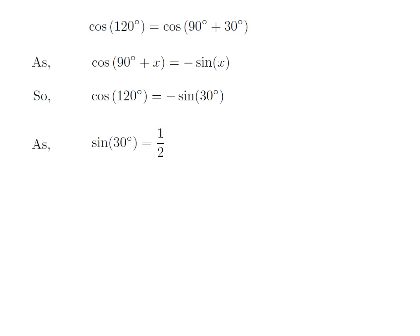We know the value of sine of 30 degrees is half. So, value of cosine of 120 degrees is equal to minus half.